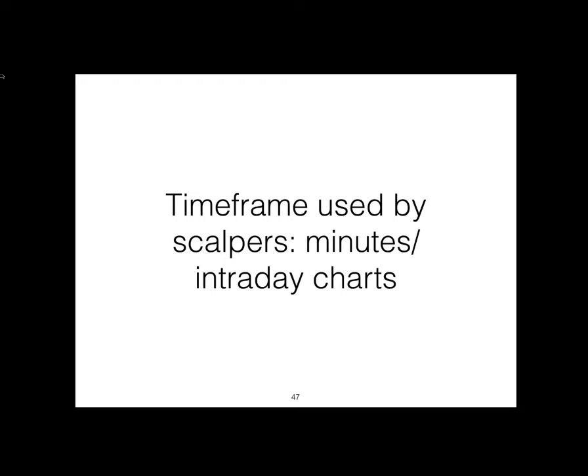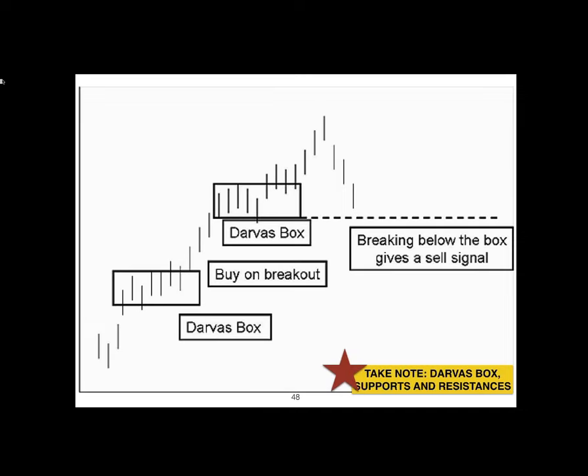Scalpers use minute charts for entry and exits and try to catch breakouts in price charts to ride the uptrend. They're not too picky about selling prices because a minimum 4% gain is a good reward for a few minutes of work. A scalper can trade based on news or events but can also use technical tools like Darvas boxes and exponential moving averages in combination. He trades breakouts primarily because breakouts ensure fast profits. If the trade goes against the scalper, he cuts losses immediately.